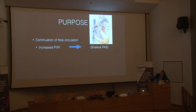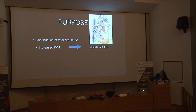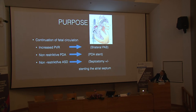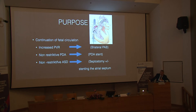What we are trying to do is continue the fetal circulation in these patients. To accomplish this, we need to increase pulmonary vascular resistance — done with bilateral PA banding — and maintain a non-restrictive PDA, achieved with PDA stenting. We also need a non-restrictive atrial septal communication, so we perform septostomy and, if insufficient, place a stent in the atrial septum.